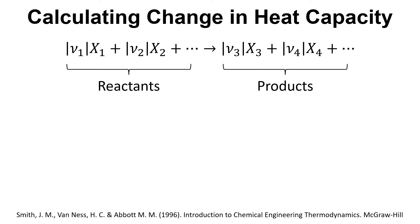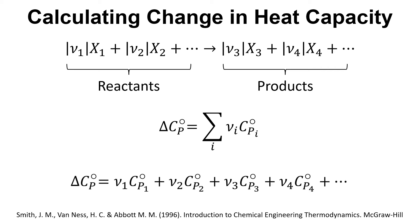What is this change in heat capacity? We use this equation: delta Cp equals the sum of the Cp for each component multiplied by its stoichiometric coefficient. Expanding that out, delta Cp equals the stoichiometric coefficient of component 1 multiplied by its Cp, plus the stoichiometric coefficient of component 2 multiplied by its Cp, and so on.